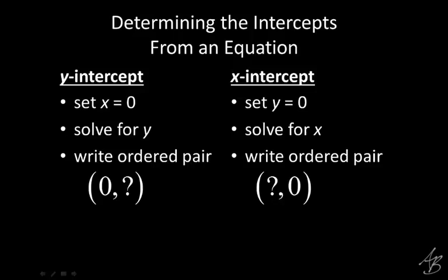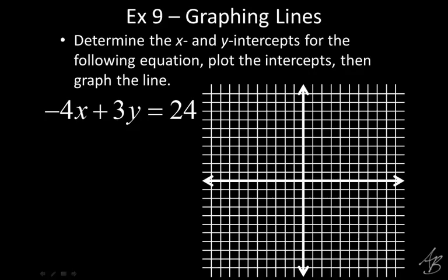This is something we've done already — we did it in the first and second examples yesterday and in the opener today. But now we're also going to not only write the ordered pair, but we're also going to graph it. So that's what we're going to do on examples 9 and 10. Example 9: we have the equation negative 4X plus 3Y equals 24. Underneath that, you're going to set up two equations — one when X equals zero, one when Y equals zero.